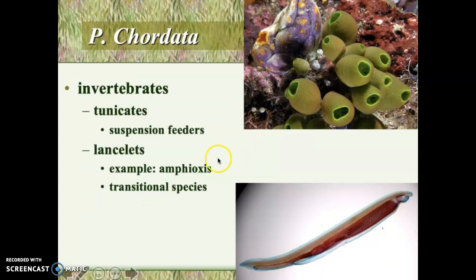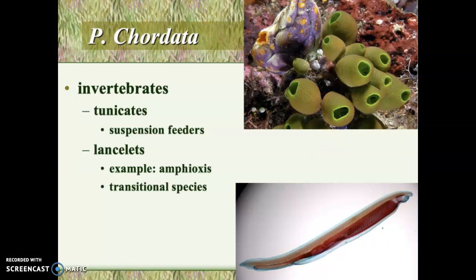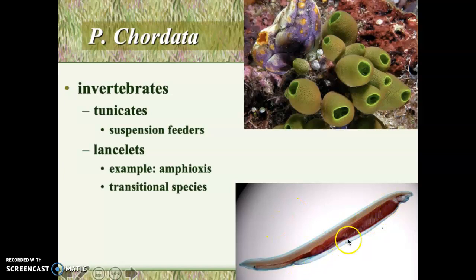Then we go into the chordates, which includes anything with a spinal cord. In the upper right-hand corner is an organism you wouldn't think has a spinal cord, but it does — it's called a tunicate, and it's a suspension feeder. In the lower right, something that looks kind of like a fish but isn't — it's called a lancelet. This is an important transitional species from the invertebrates to the vertebrates.